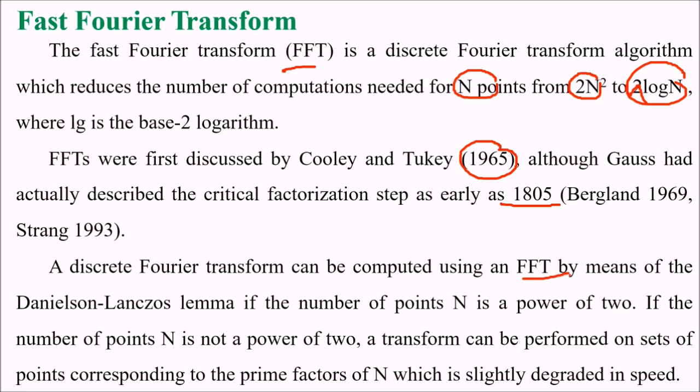DFT can be computed using FFT by means of the Danielson-Lanczos lemma if the number of points n is a power of 2. If the number of points n is not a power of 2, a transform can be performed on sets of points corresponding to the prime factors of n, which is slightly degraded in speed.